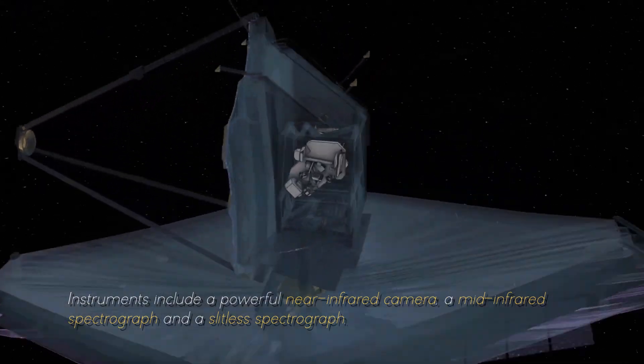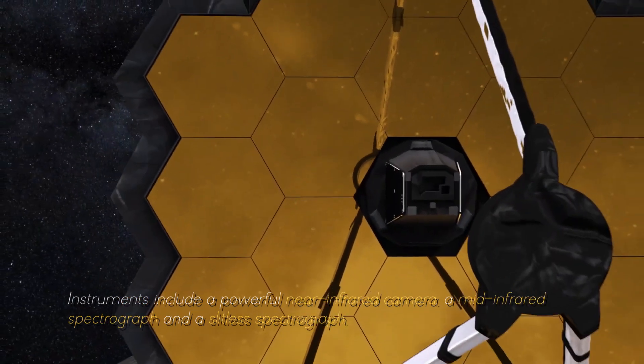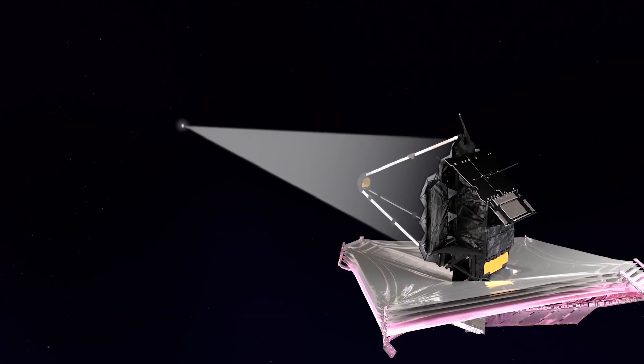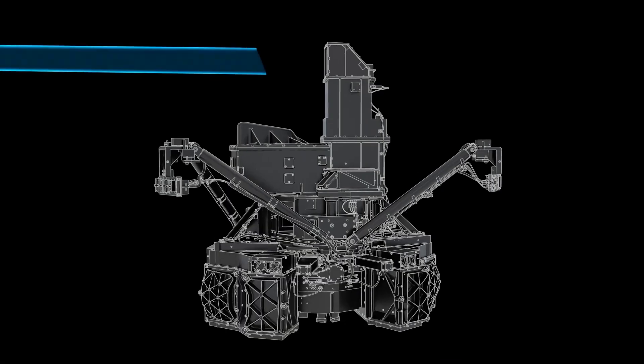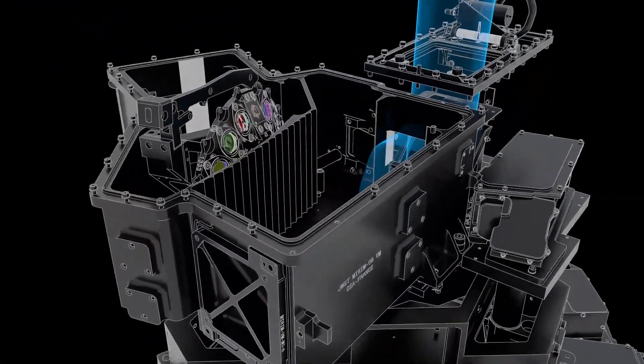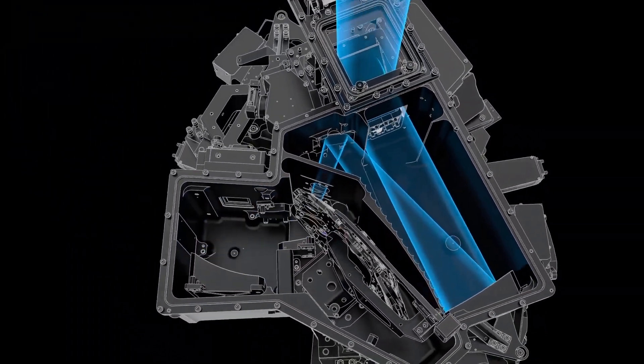This allows the JWST to collect and focus light from distant celestial objects with unmatched precision and sensitivity. Instruments include a powerful near-infrared camera, a mid-infrared spectrograph, and a slitless spectrograph. These instruments work together to capture images, measure spectra, and study the properties of objects ranging from the oldest galaxies to the planets of our solar system.